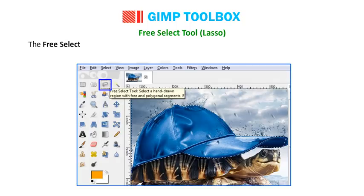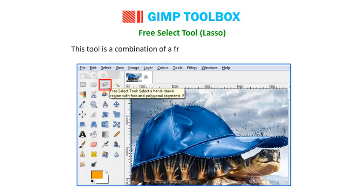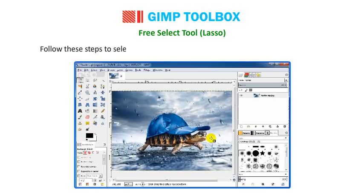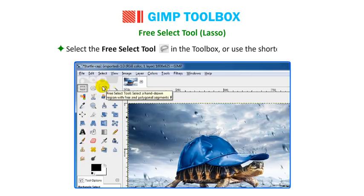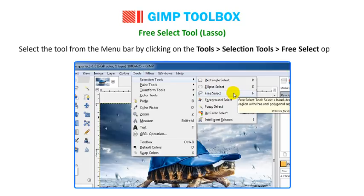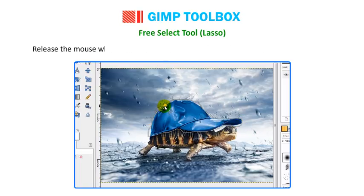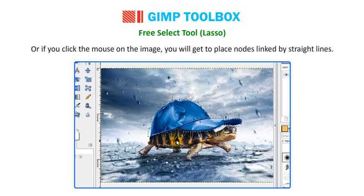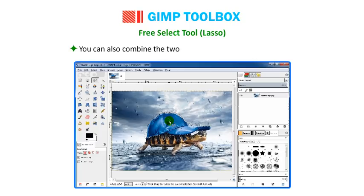The Free Select Tool (Lasso) is used to make freehand drawing selections by holding the mouse button and dragging. This tool is a combination of a freehand and a polygon select tool. To use it: select the tool in the toolbox or press F, or go to Tools, Selection Tools, Free Select. Drag the mouse over the image to be selected, then release the mouse when you reach the starting point — the image portion will be selected. Alternatively, clicking the mouse on the image lets you place nodes linked by straight lines. Tie the end nodes together or press Enter to finalize the selection. You can also combine the two modes while selecting.